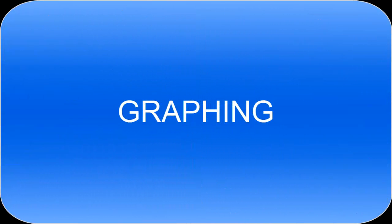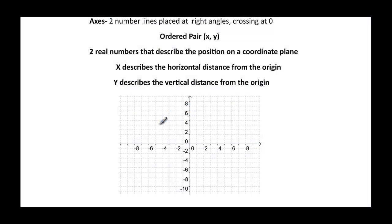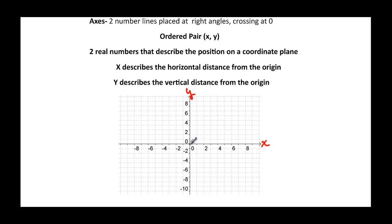This video will talk about how to graph on a Cartesian coordinate. In a Cartesian coordinate there are two number lines called axes. The one going up is called the y-axis and the one going across is called the x-axis. The horizontal x-axis has positive numbers on the right and negative numbers on the left. The vertical y-axis has positive numbers at the top and negative numbers at the bottom. Right in the middle where they cross is called the origin, which is the point (0, 0).